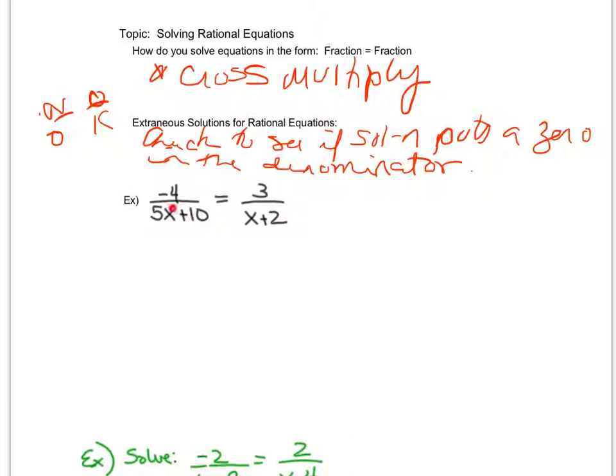In the first example, notice on the bottom I have 5x plus 10. When I cross multiply, I'm going to have to acknowledge that the 3 is going to multiply by the entire quantity of the bottom. To show it's being multiplied by that whole quantity, I will put parentheses around the 5x plus 10. Same thing with the x plus 2.